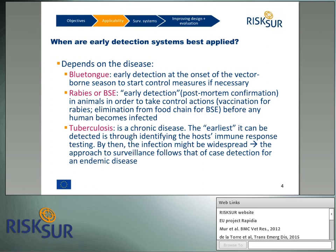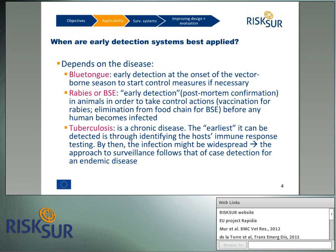Given their zoonotic nature, detection of rabies and BSE in animals is considered early detection for humans, since actions can be taken to minimise the risk of a human becoming infected when an animal is found positive. Another disease commonly cited for early detection is tuberculosis, particularly for countries that have achieved freedom from disease. However, tuberculosis is a chronic disease — the earliest it can be detected is through identifying the host immune response — and by then the infection is probably widespread to other animals. So tuberculosis best follows the approach for case detection surveillance rather than early detection surveillance, although the risk-factor-based methodology is very similar; there is a philosophical difference.